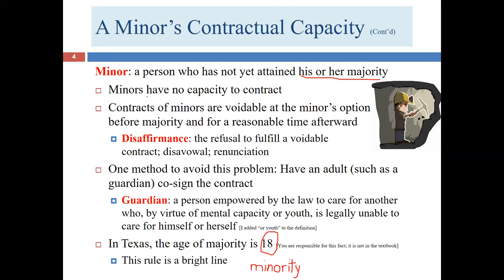Minors don't have any inherent capacity to contract. Imagine twins Bob and Brad, both 17 and days away from their 18th birthday. Bob is very sophisticated — he's had jobs, taken business and accounting courses, has a high IQ, started businesses, made significant money, and reads the Wall Street Journal daily. Despite knowing more about business than the average adult, he is under 18 and our legal system says Bob doesn't have any inherent ability to contract.